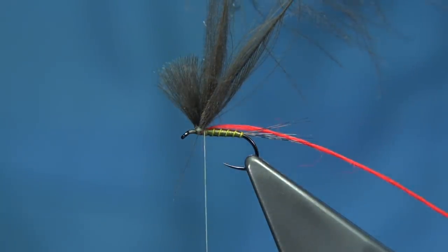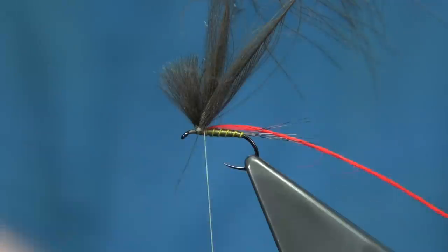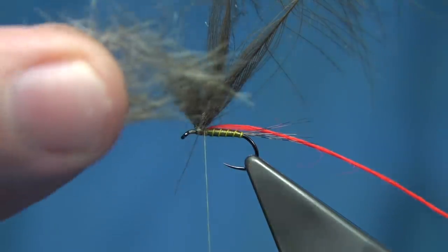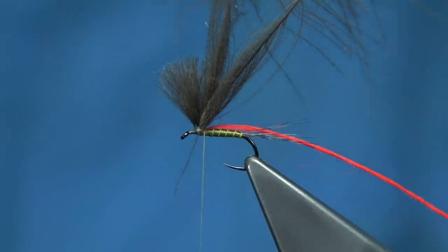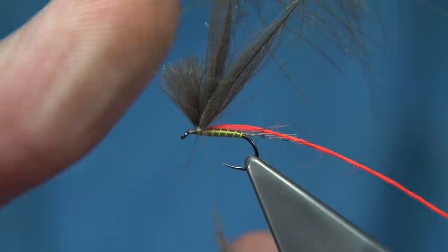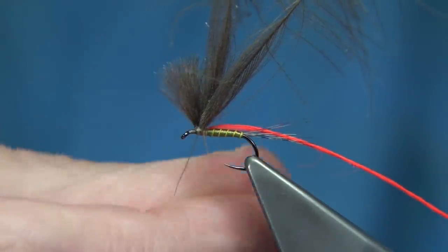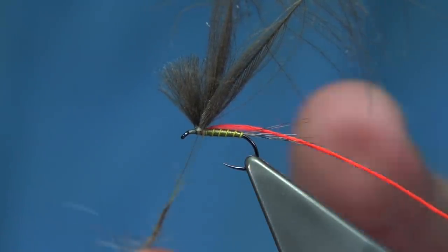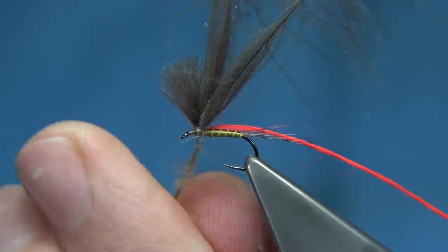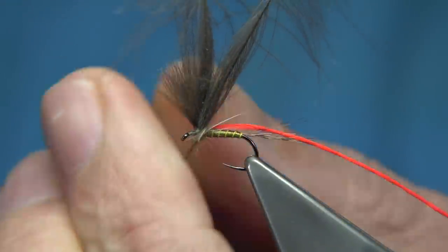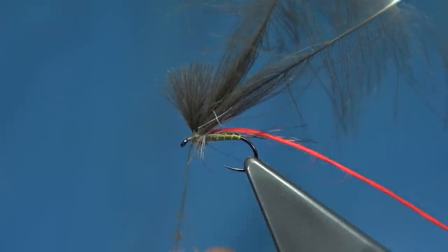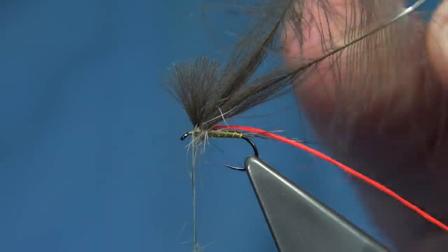Then we want to get some natural dubbing. This is just a squirrel dub—it's kind of coarse. You could use muskrat or anything like that. Just dub it on. This is more for the back rather than the front. Slide it up just to tidy the thorax up. A half turn at the front, take away the excess.